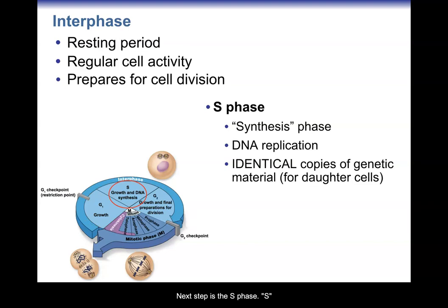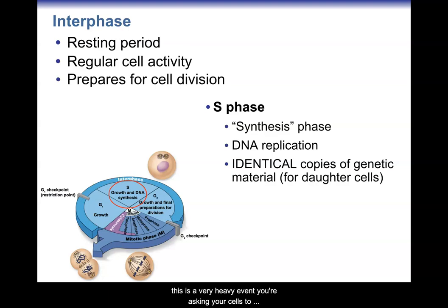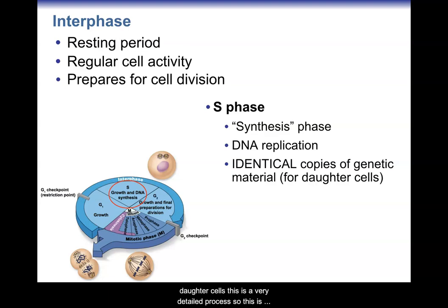Next up is the S phase. S is named for synthesis. During the S phase of interphase — we're still in interphase — DNA replication occurs. Your DNA makes copies of itself so that when mitosis happens, you can have duplicate daughter cells with genetically identical material. This is a very heavy event. You're asking your cells to duplicate their DNA — millions of nucleotides that need to be duplicated successfully to copy the same genes onto new daughter cells. A good chunk of interphase is spent duplicating your DNA.